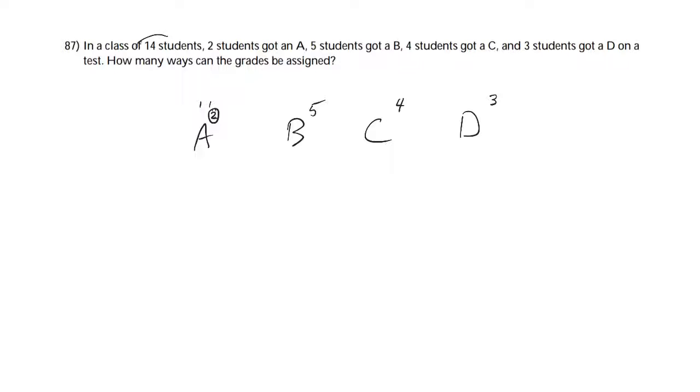So if there's 14 people all together, there'd be 14 people, and from those, you're choosing two. Okay, that'll get me my A's. To get the B's, I don't have 14 people anymore, so I lost two of them. So I only have 12 people left, and from those, I need to choose five.